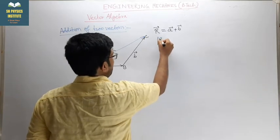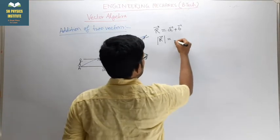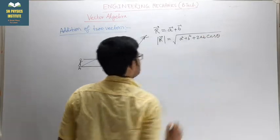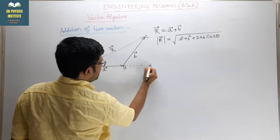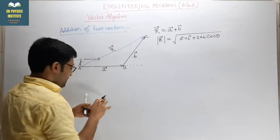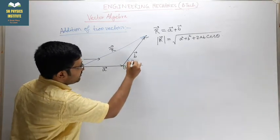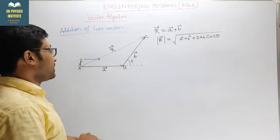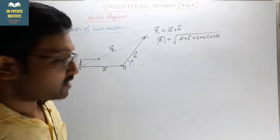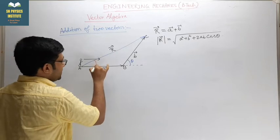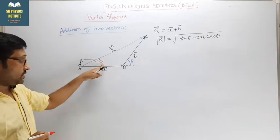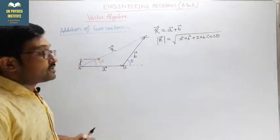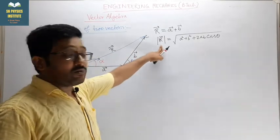The magnitude of R is: |R| = √(a² + b² + 2ab·cosθ), where θ is the angle between vector a and vector b. This is the angle between the two vectors. If you want to find the direction, we need to find angle alpha — the angle the resultant makes with respect to vector a. So now we are doing the derivation of this formula.